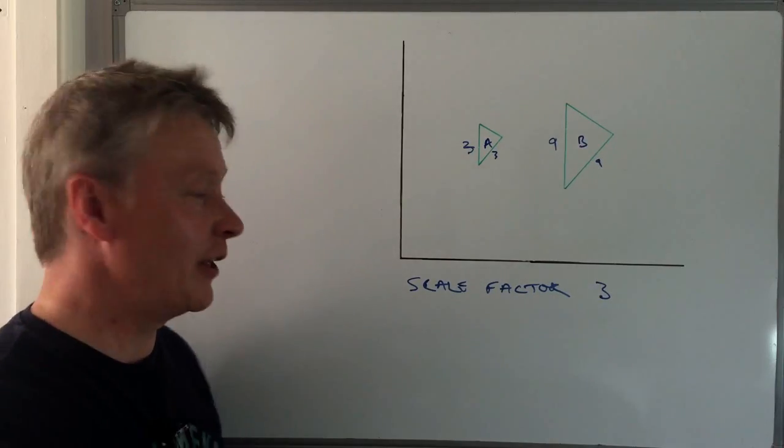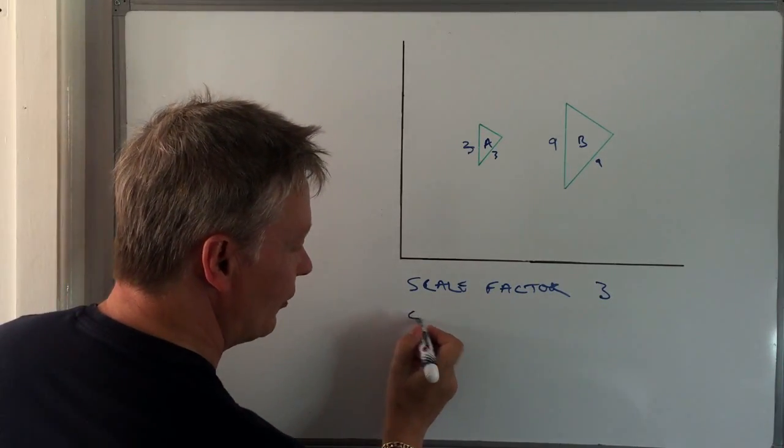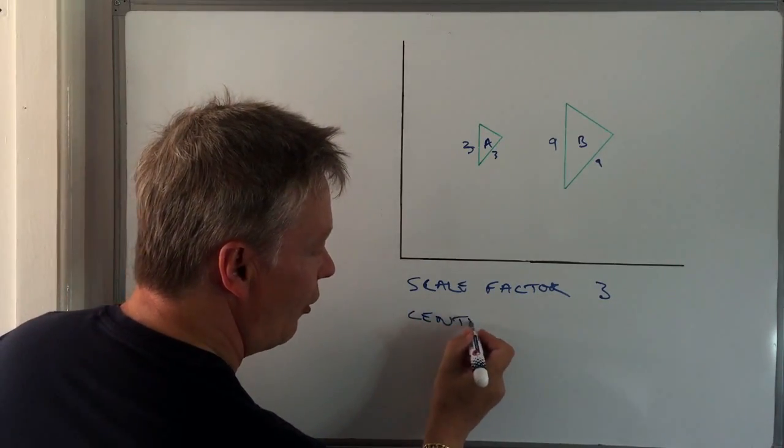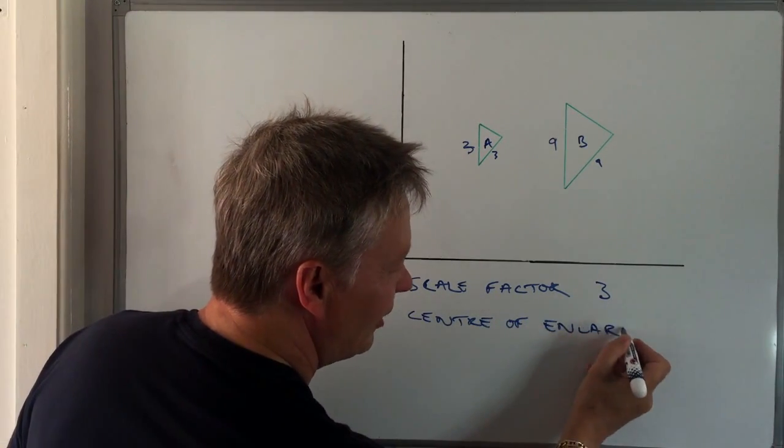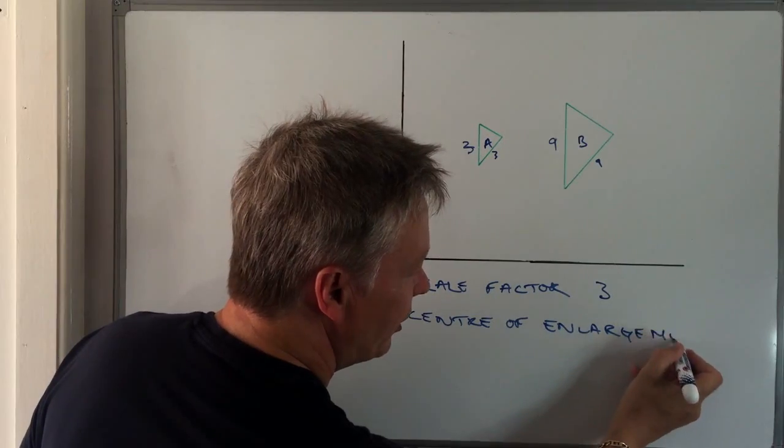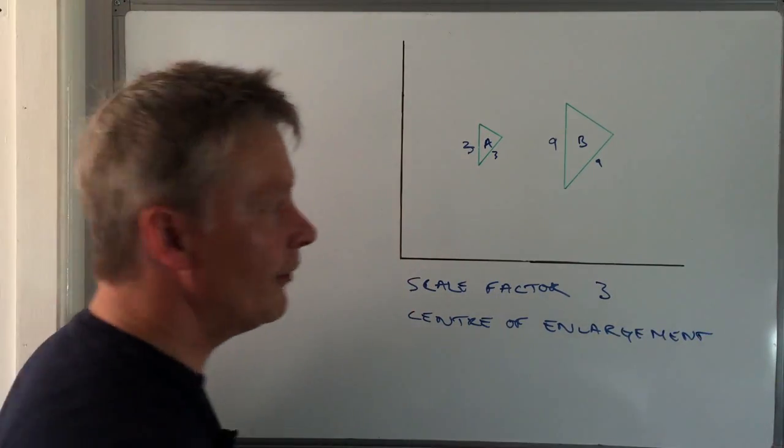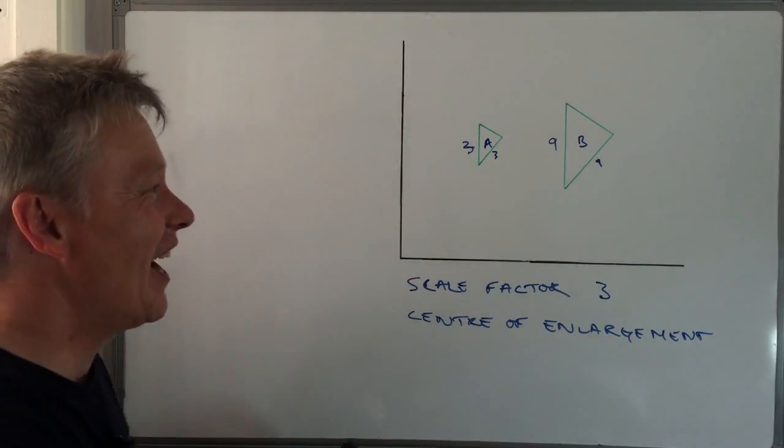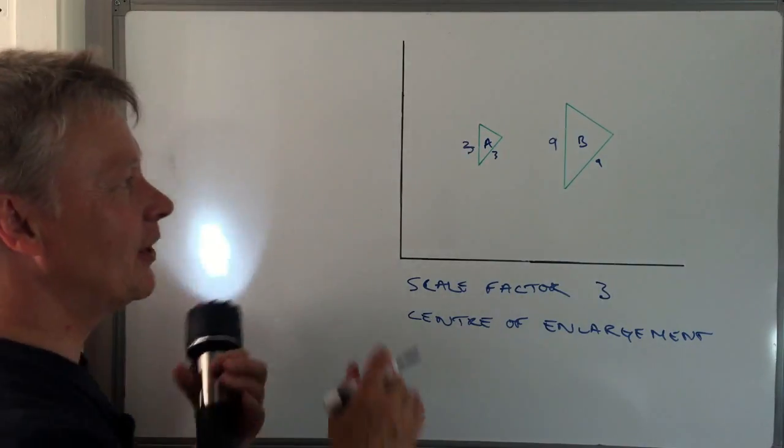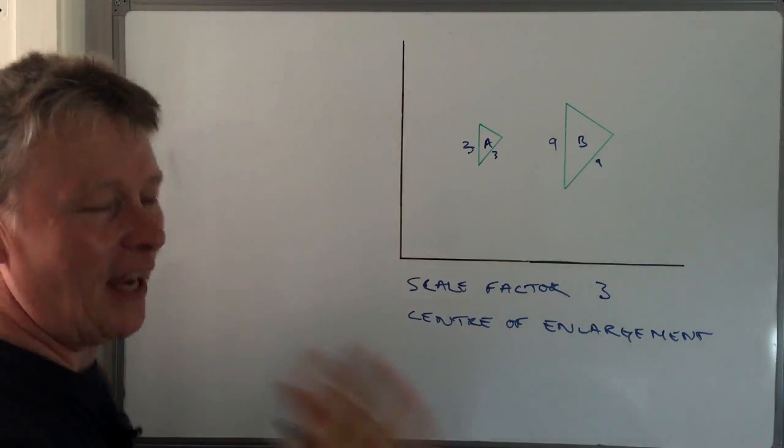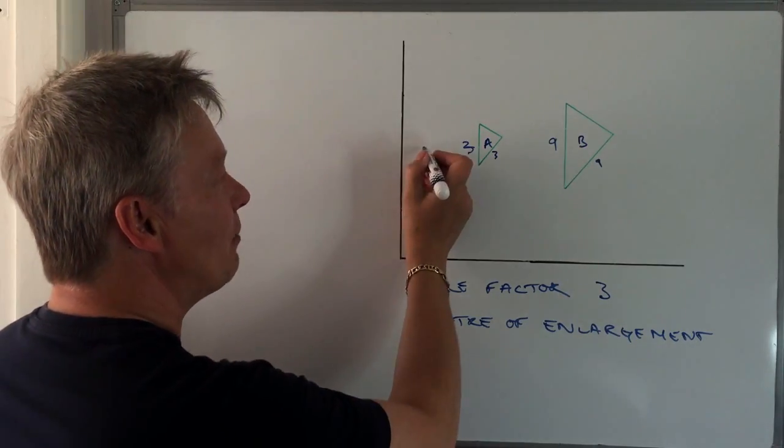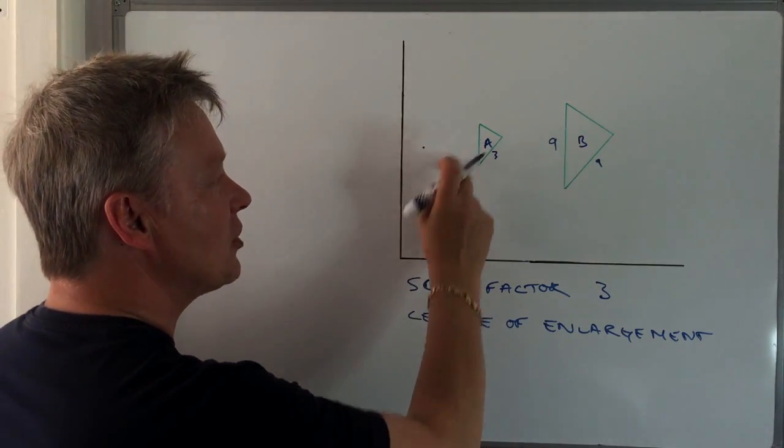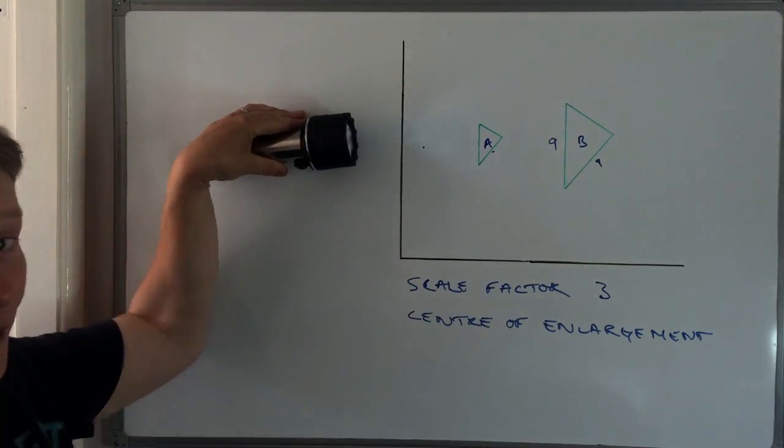The second thing that you need to be aware of is something called the center of enlargement. Now this is a little bit trickier, and most people will use a ruler rather than a torch to do this. But what we basically say is if you can imagine this is a massive big triangle, something like a pyramid, and you're stood about there and you've got this torch and you're shining it across.